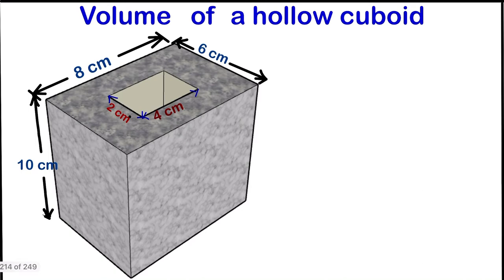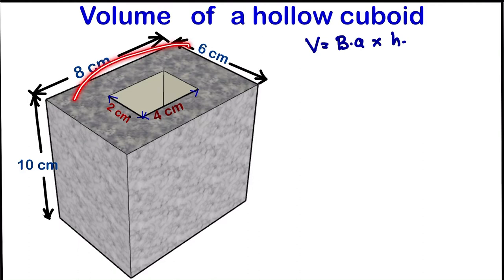We are going to consider two methods of solving this problem. The first one: the volume V will be equal to the base area times the height. So you can use the base area — this will represent the base area and this will be the height — times the height.